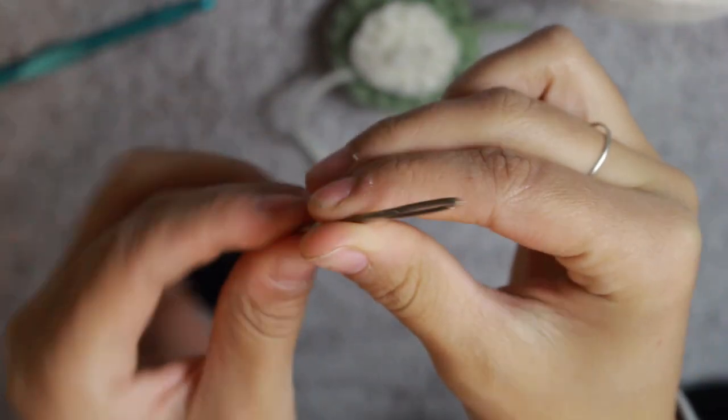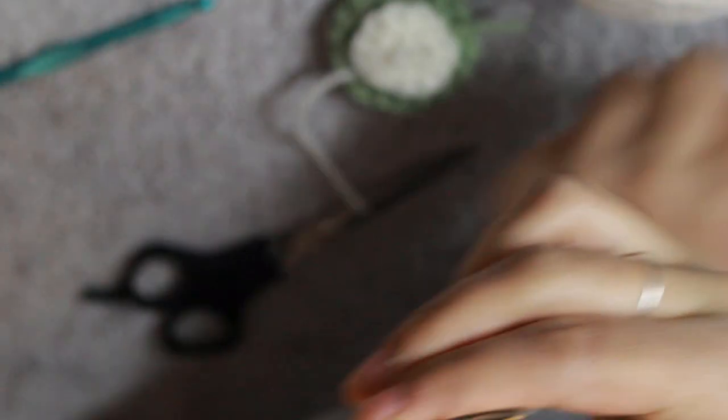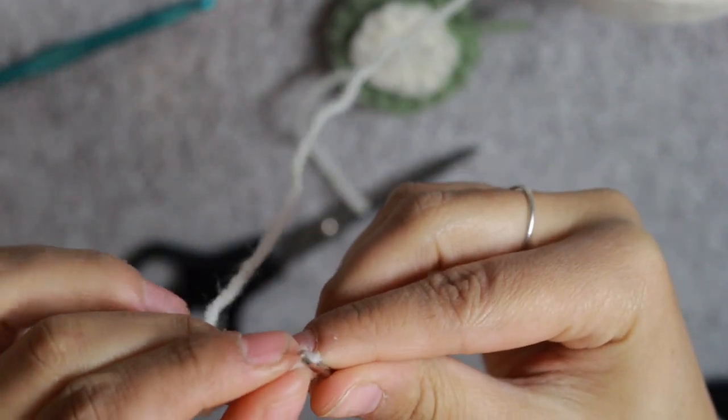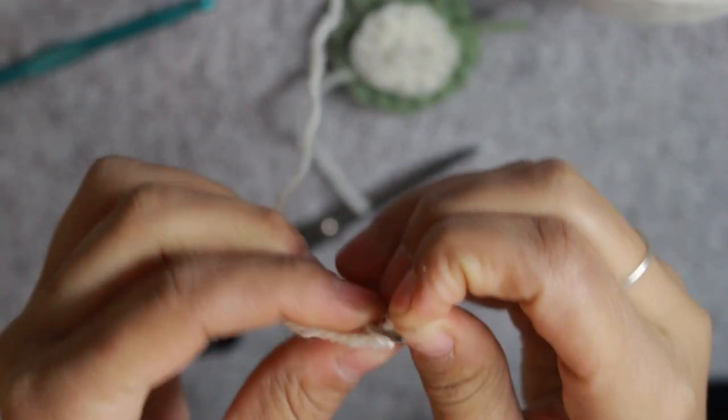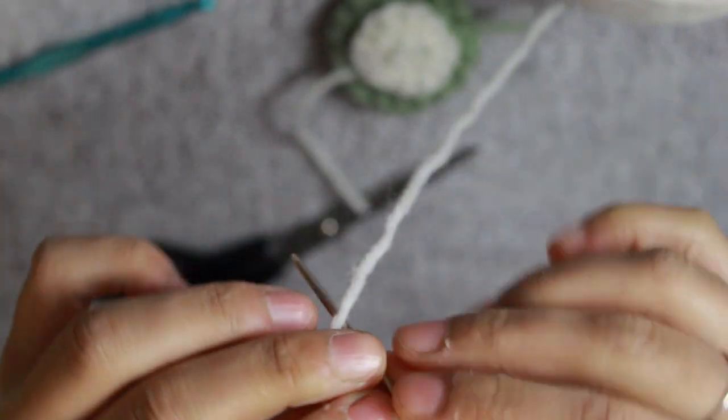Once you have that done, you'll sew the white onto the green using a yarn needle and the yarn of your choice, I would assume it would be white, but you could also use green if you were worried about it coming through on the back.